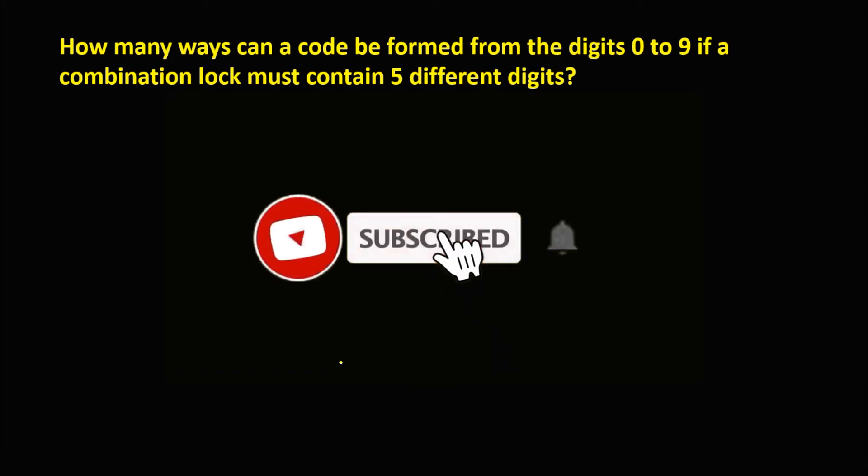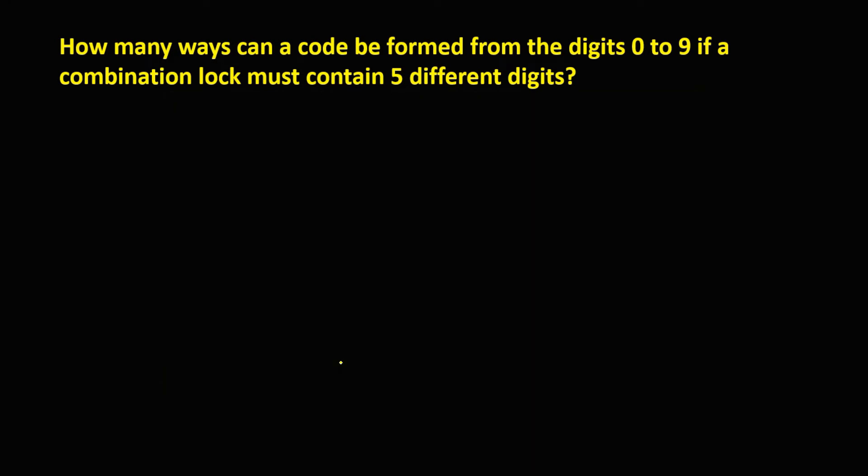Okay, so welcome to MathStoria and let's have this problem. How many ways can a code be formed from the digits 0 to 9 if a combination lock must contain 5 different digits?